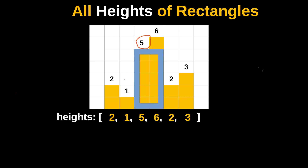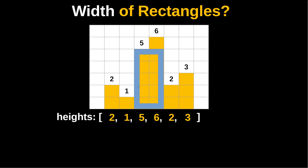Now let's talk about the width of these rectangles. Take this rectangle with a height of 5. The width is defined by two indices on the left and on the right. If you have a height of 5, the rectangle includes all bars of the same height or higher on both sides. The boundaries are defined by the bar with a lower height or the boundary of the array. On the left, the value 1 defines the left limit because 1 is smaller than 5. On the right, the value 2 defines the right limit because 2 is less than 5.